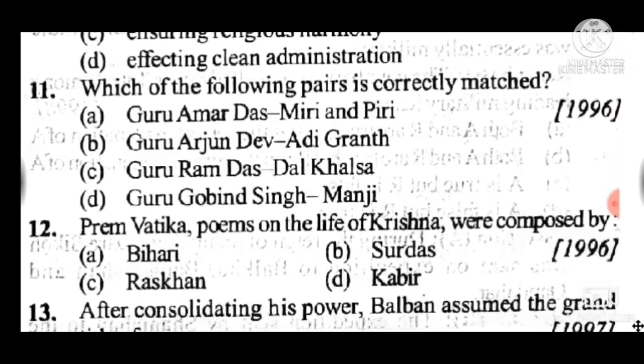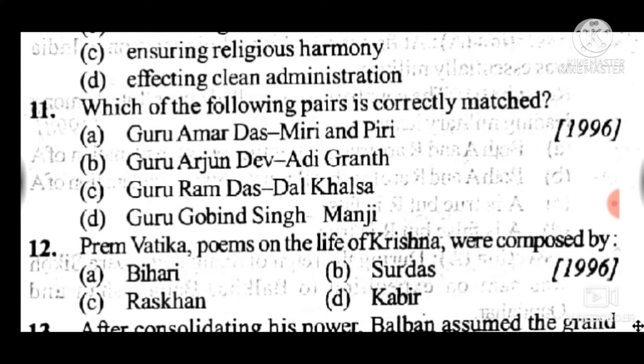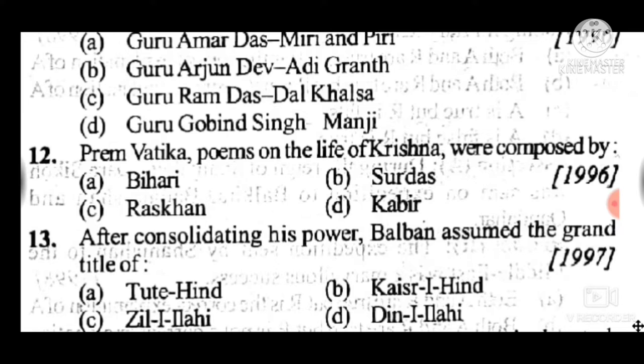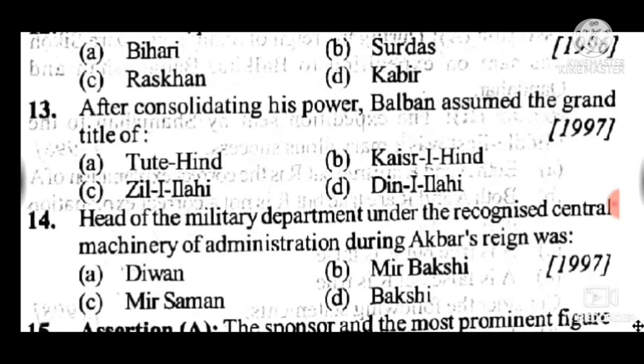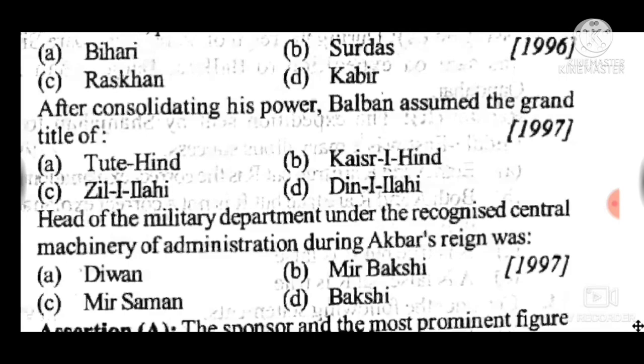Question 12: Premavati, a poem on the life of Krishna, was composed by — answer is C, Raskhan. Question 13: After consolidating his power, Balban assumed the grand title of — answer is C, Zill-i-Ilahi. Question 14: The head of the military department under the recognized central administration during Akbar's reign was — answer is B, Mir Bakshi.